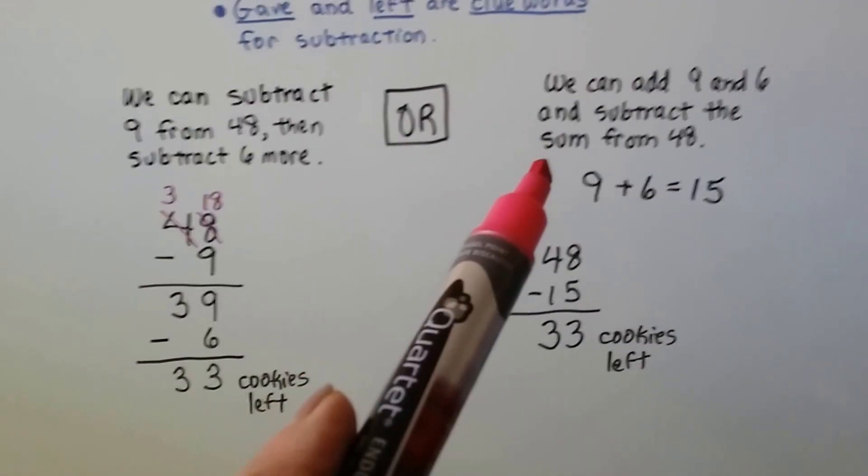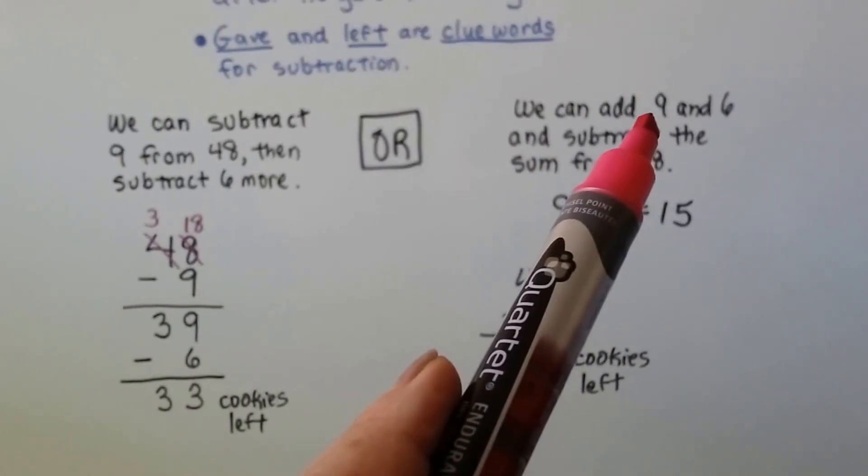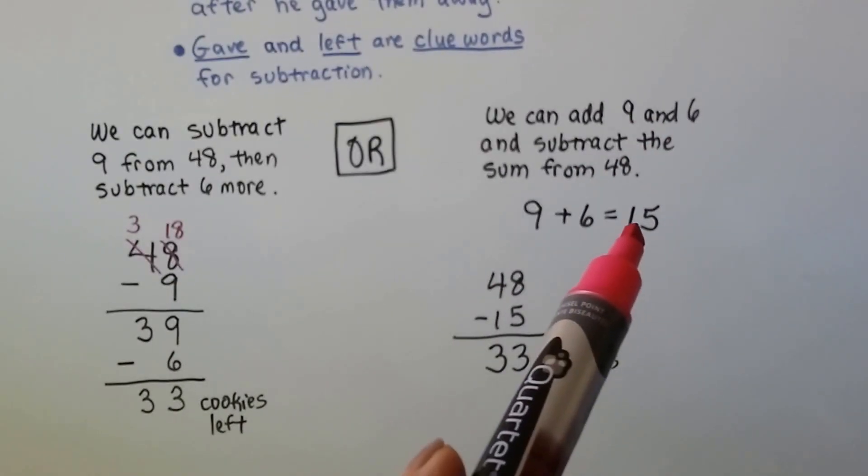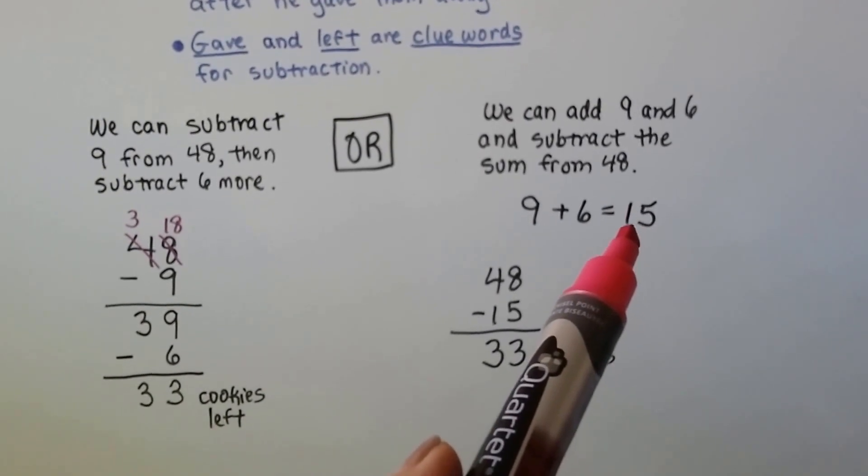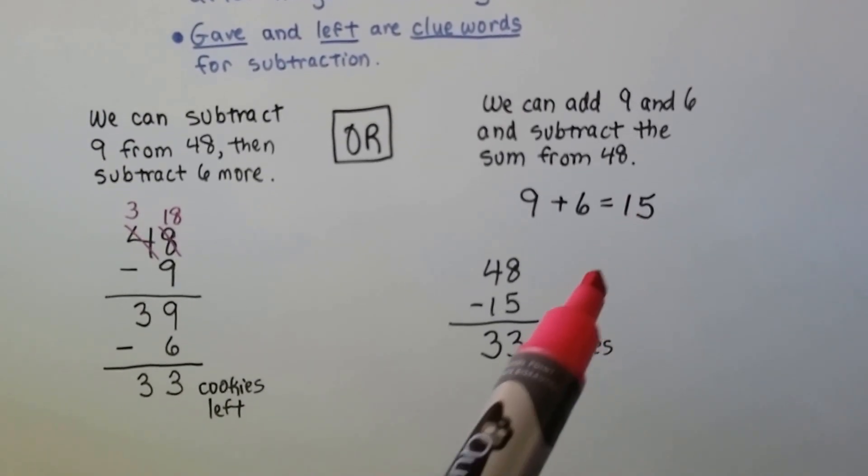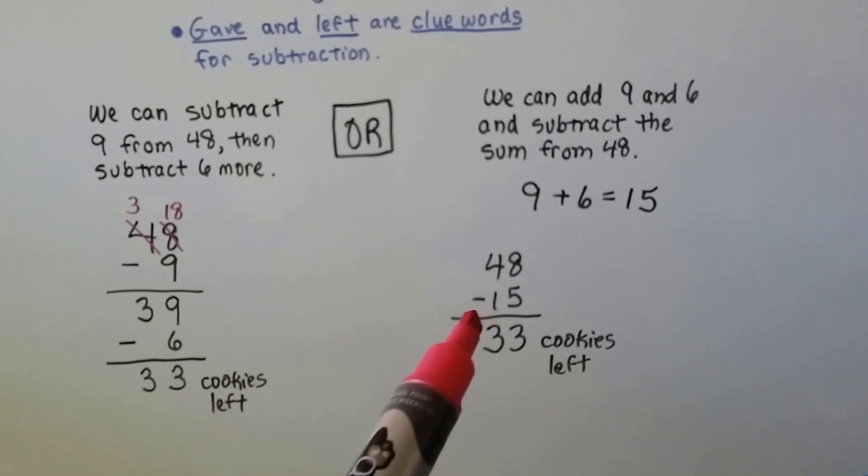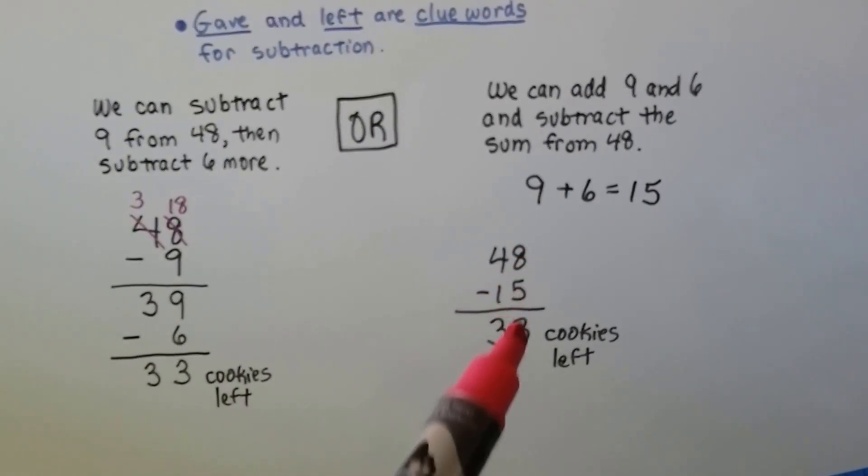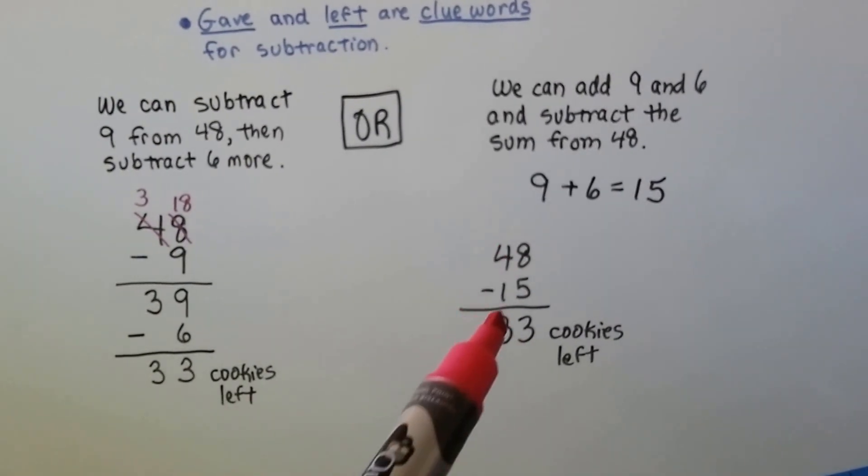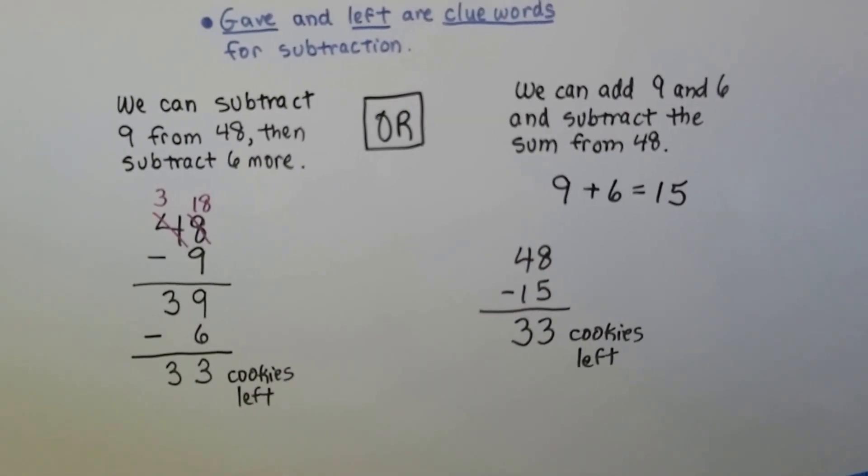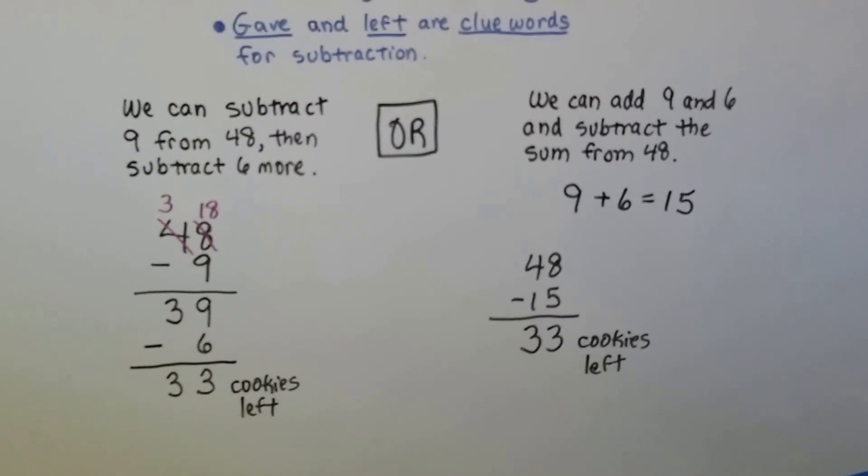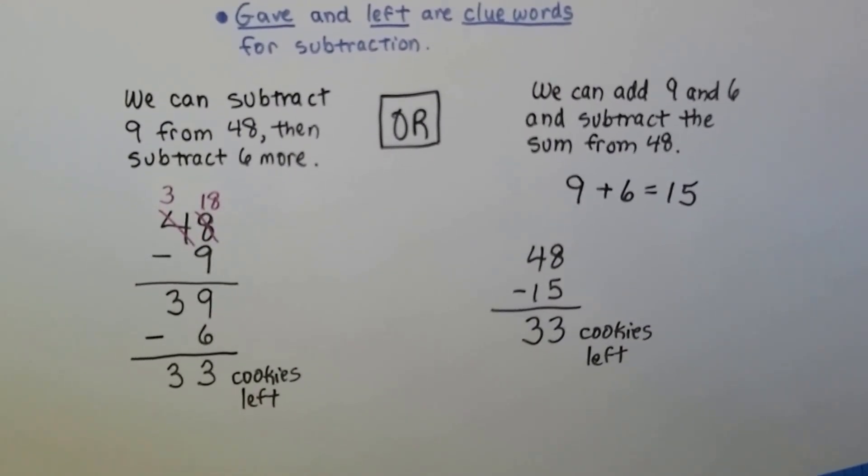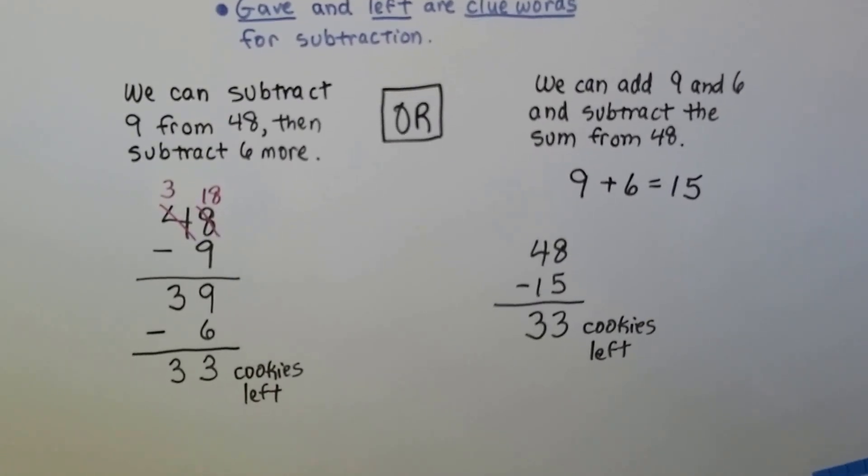We also could have done it this way. We could have added the 9 that he gave away and the 6 that he gave away to find the total sum of what he gave away, which was 15. Then we could subtract the 15 from the 48 cookies he made. 8 minus 5 is 3 and 4 minus 1 is 3. So sometimes there's more than one way to solve a problem. You can still get the right answer. There just might be another way to solve it.